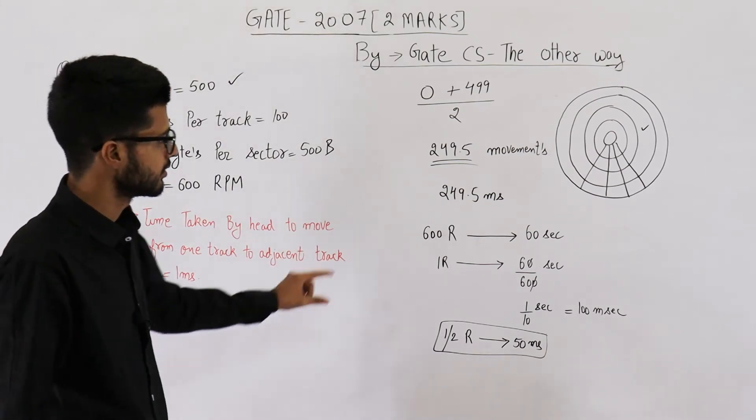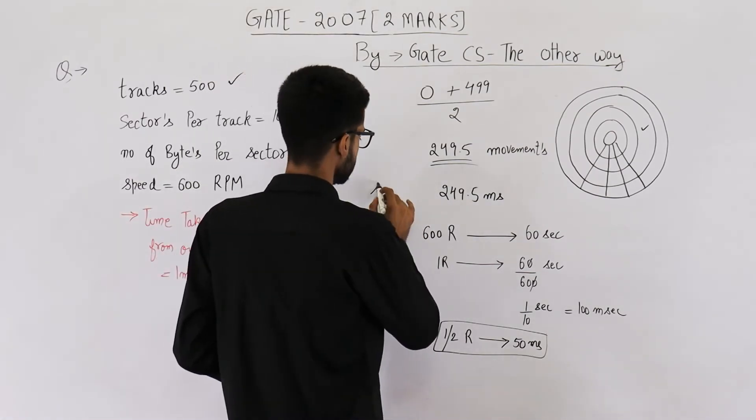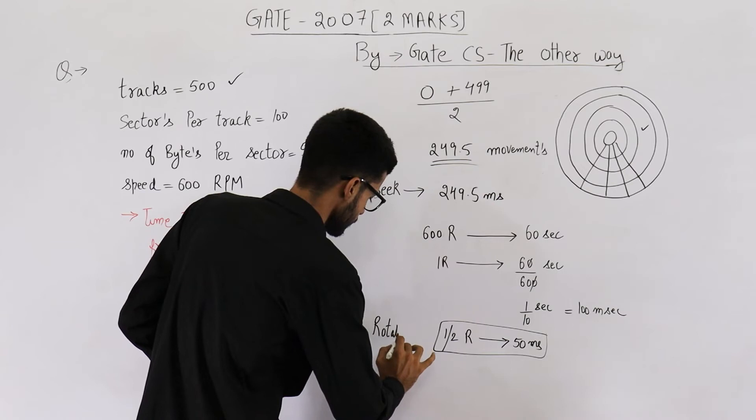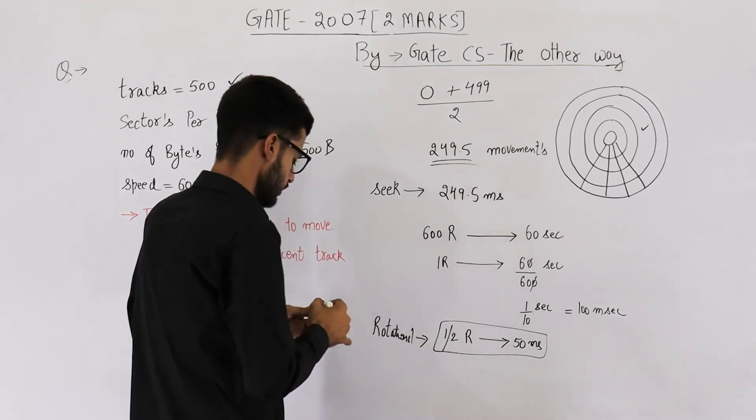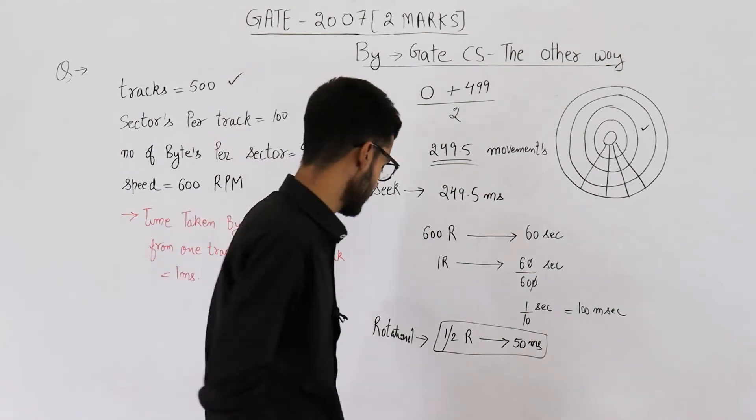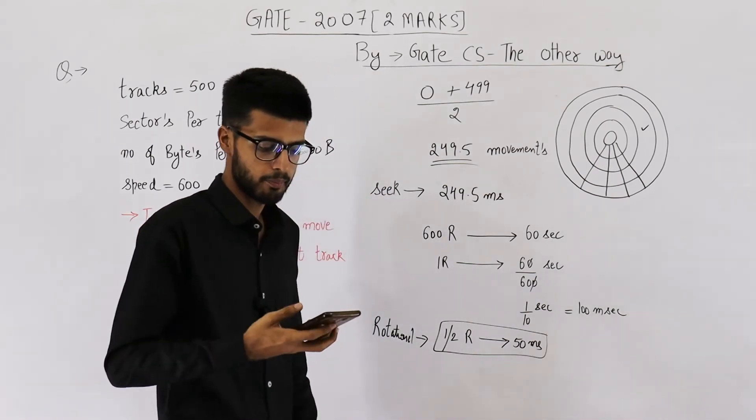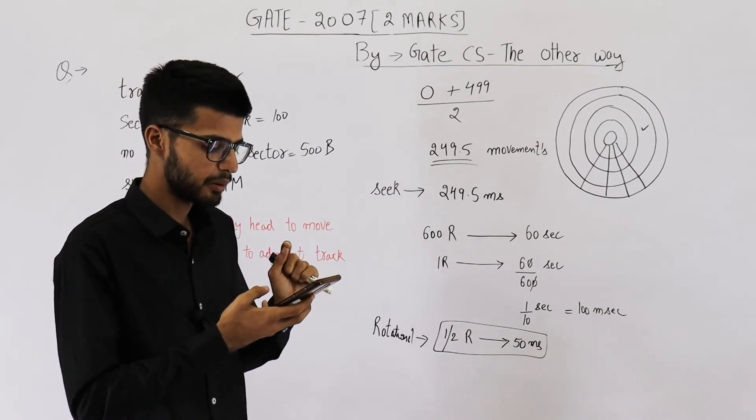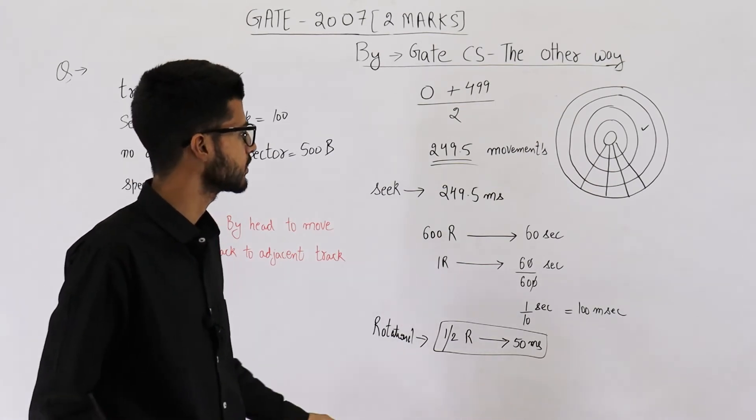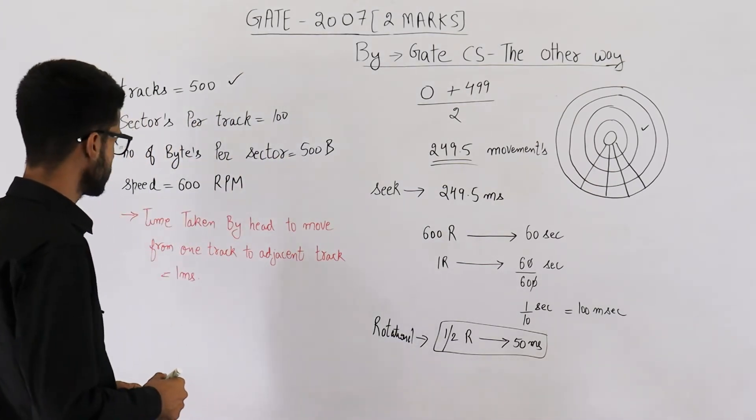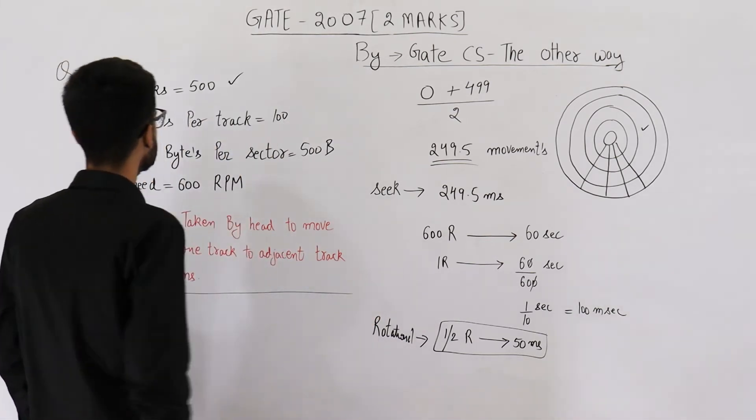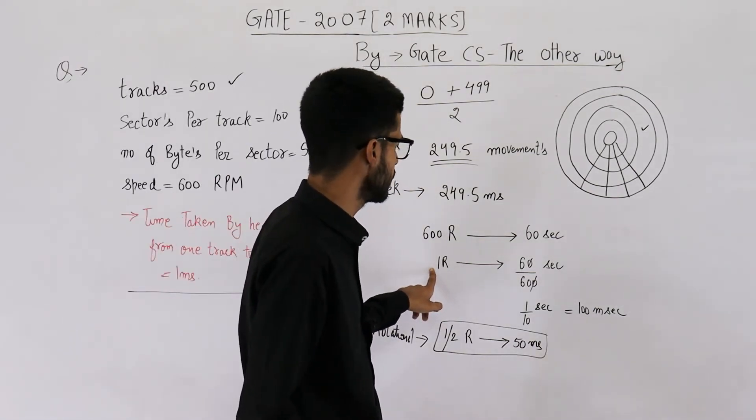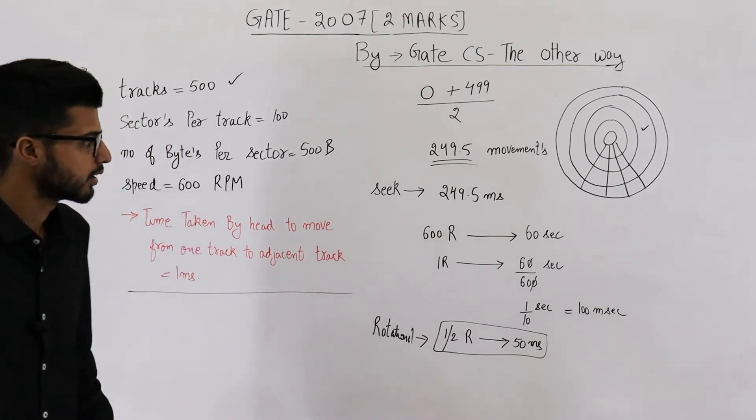Now you very well know seek time and the rotational time. So now let's try to find out the transfer time. They are asking what is the average time taken for transferring 250 bytes from disk. Let's try to find out the transfer time for 250 bytes. You can see that in one rotation, in one complete rotation, how much data can be transferred? Let's find it out.